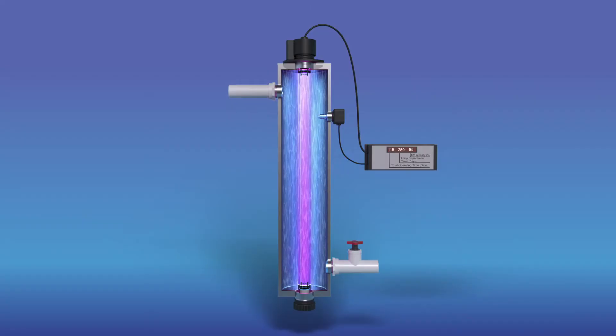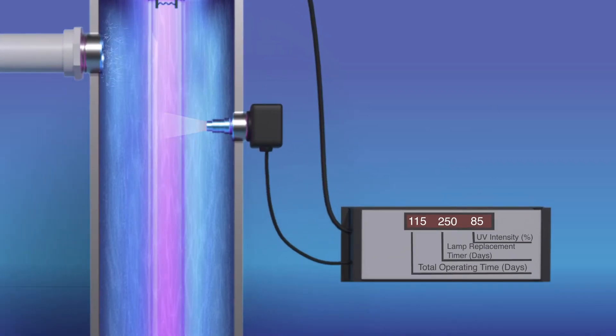Many UV systems will have an option to include a sensor that monitors how much UV light is passing through the water. This is an important feature and should be included in any treatment system to verify the water is not too dirty for effective treatment.